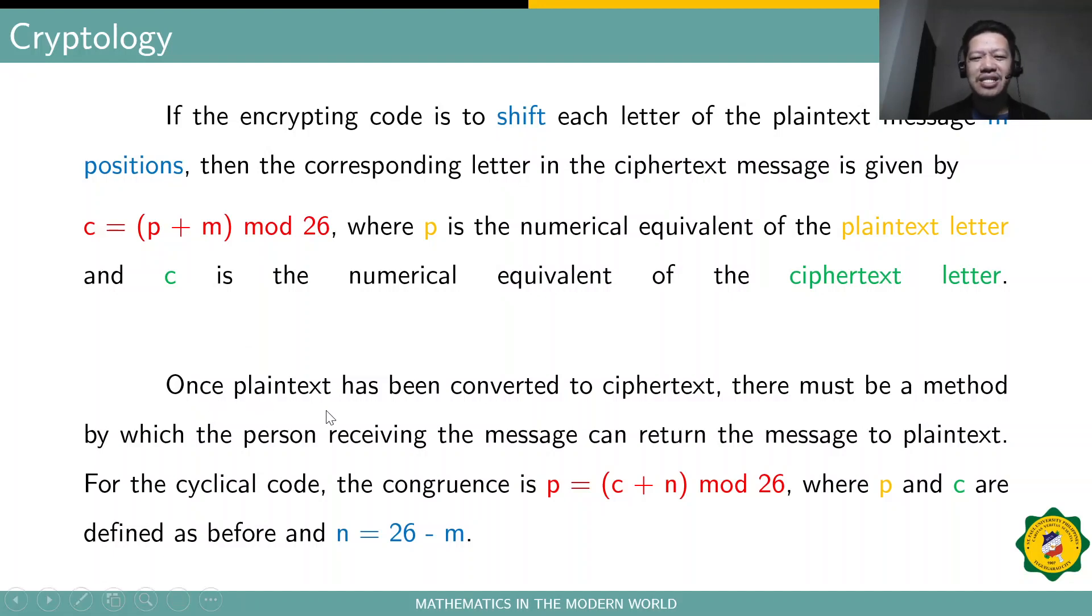Since once the plaintext has been converted to ciphertext, there must be a method also or a formula by which the person receiving the message can return the message to plaintext. So, there's what we call the decryption key. For the cyclical code, the congruence will be P is congruent to C plus N modulo 26. So, this will be the formula for the decryption key, where P and C are defined as before. And then, you use the equation N is equal to 26 minus M. To get the value of N here, you use this equation N is equal to 26 minus M.